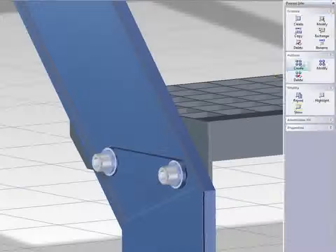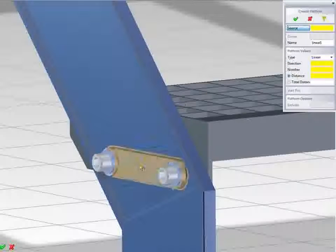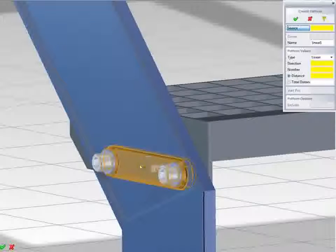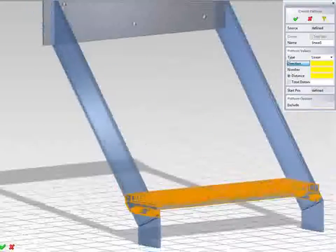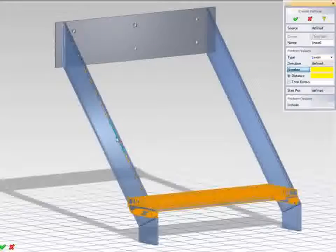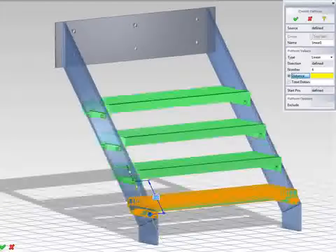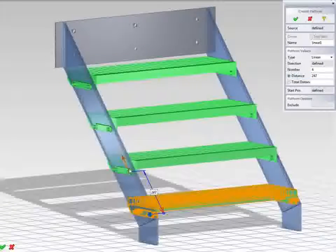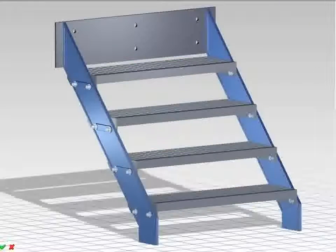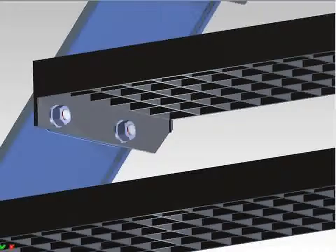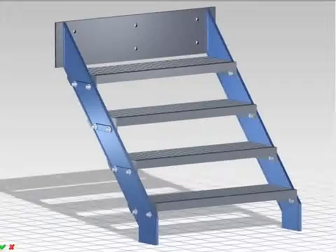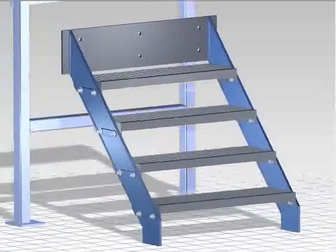To create the pattern, I simply select the user-defined features, parts, and assemblies that I want to use as the base for the pattern. I'll create four new steps with a linear pattern. Notice that I see immediate feedback and can either drag the pattern dynamically or enter a precise value. All the bosses with through holes have been created, together with the mounting assembly and the steps.